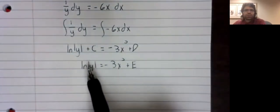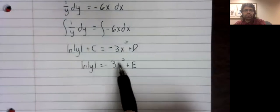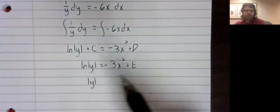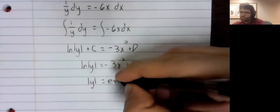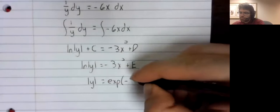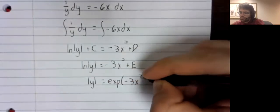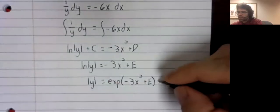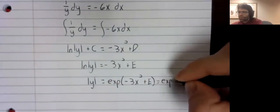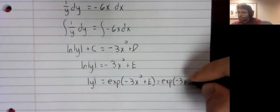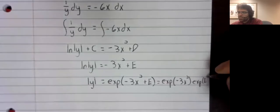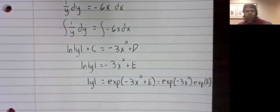And if we now take the exponential of both sides of this equality, on the left, the exponential and the natural logarithm cancel out. On the right, the exponential of this sum can be rewritten as the product of exponentials.